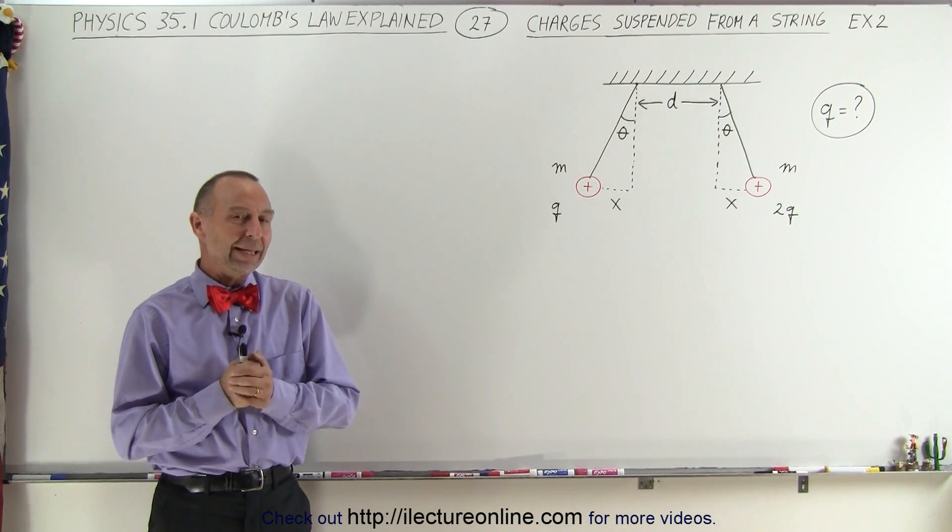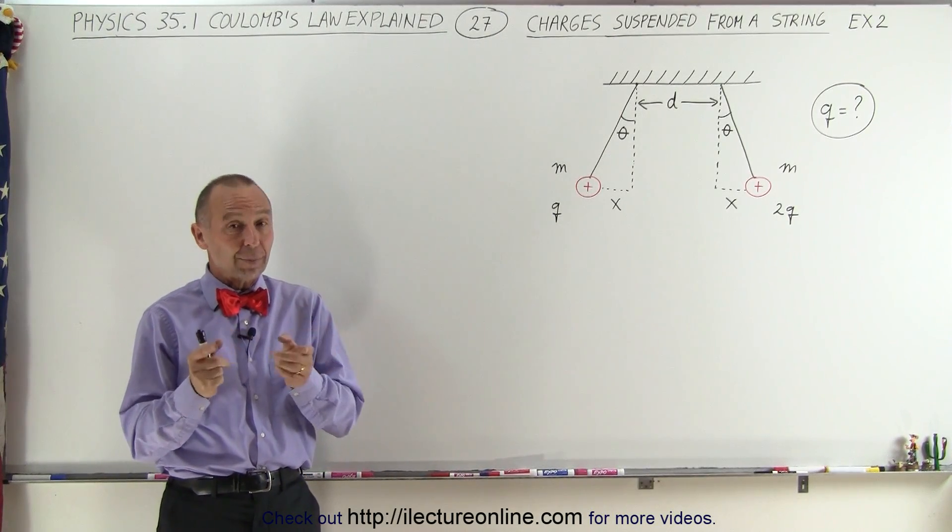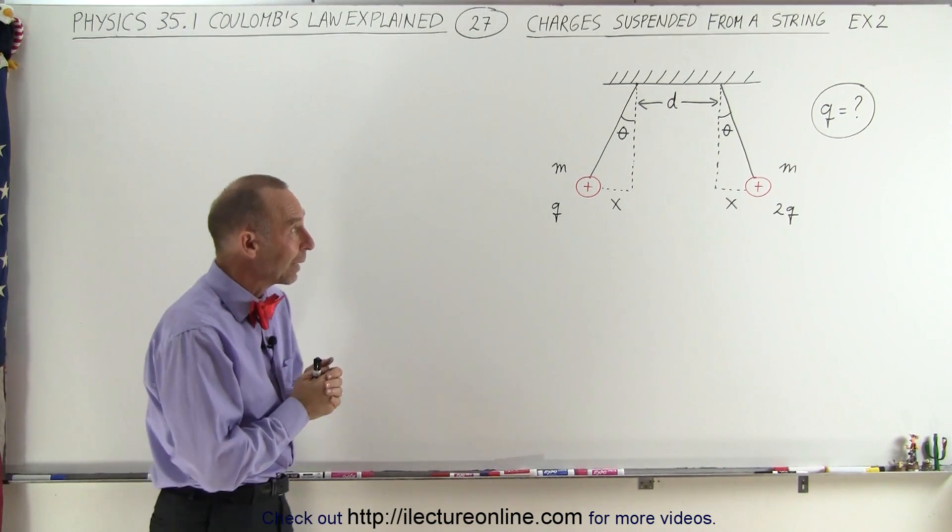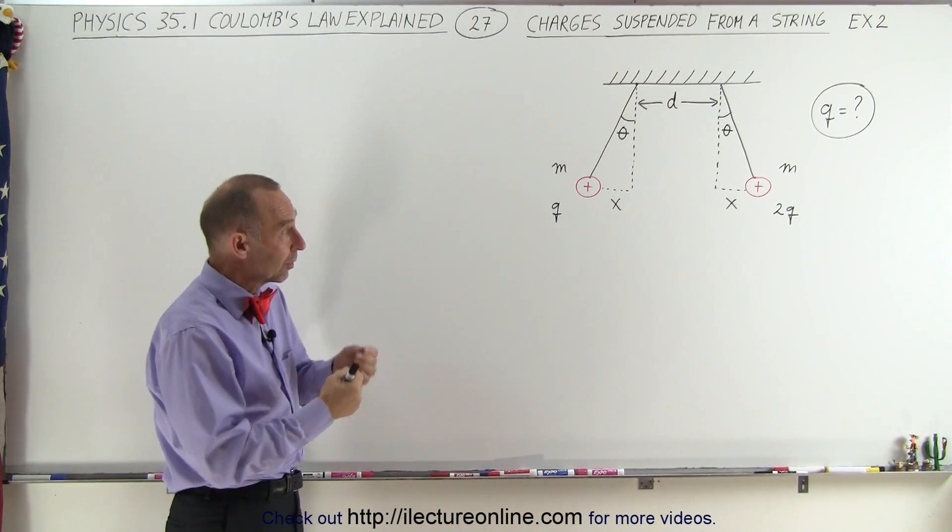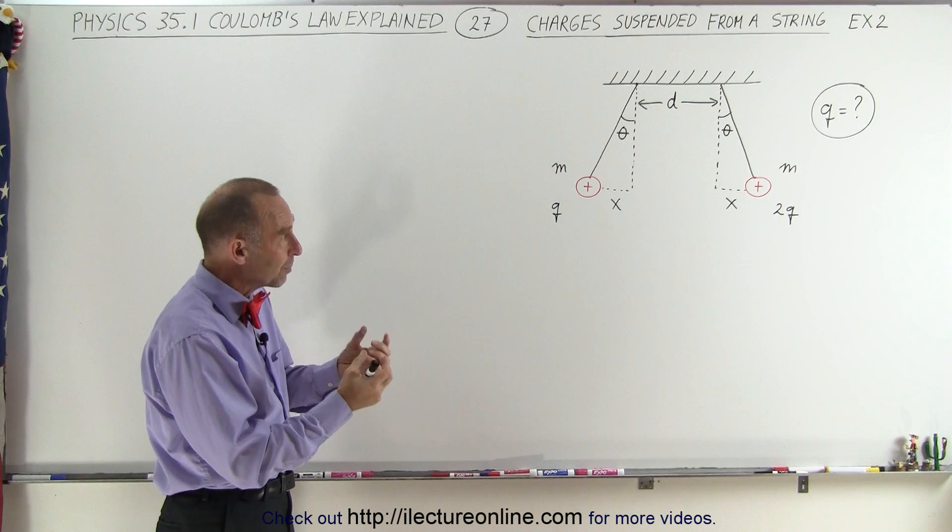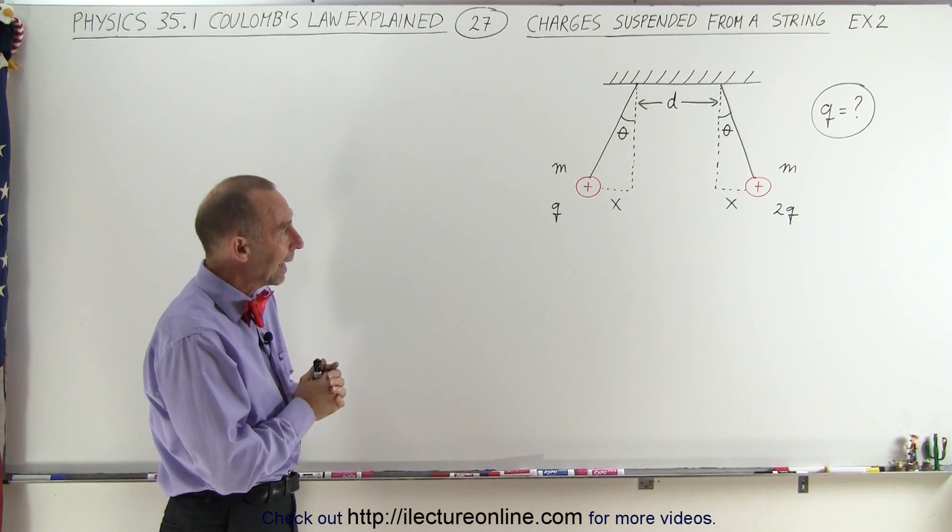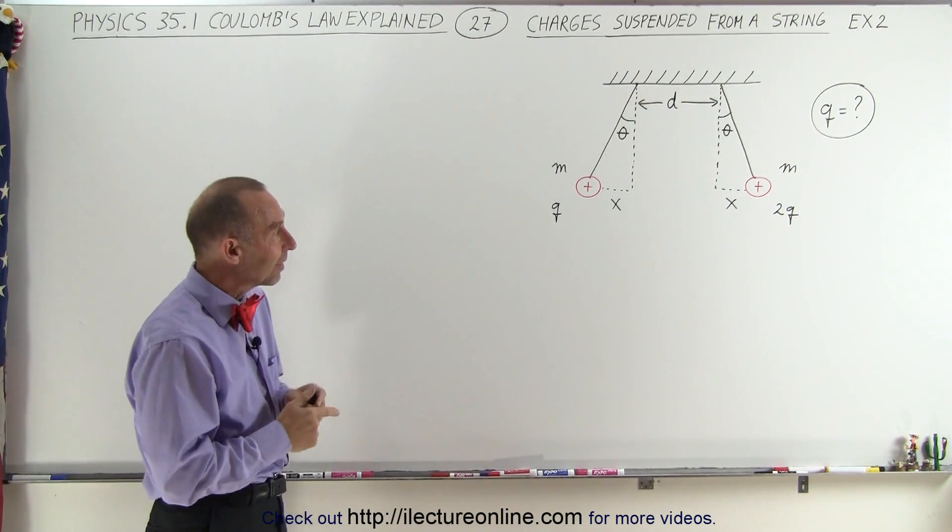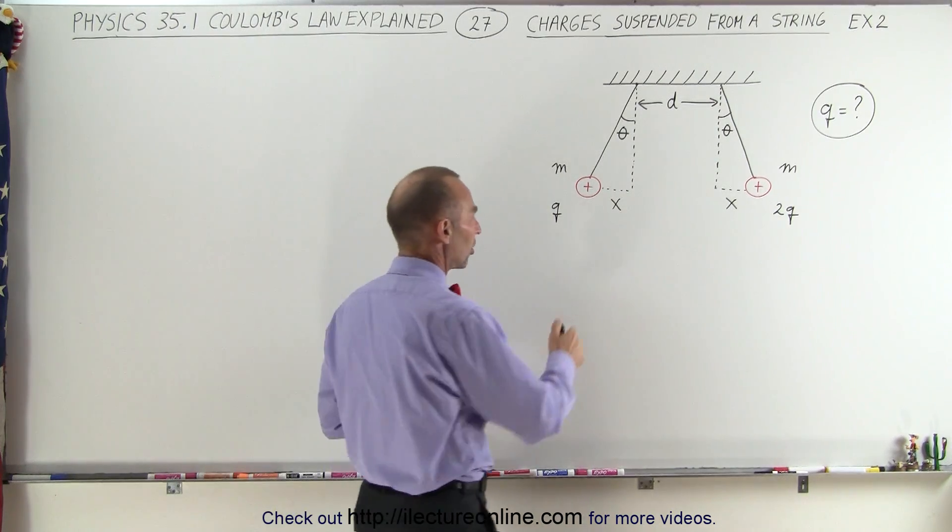Welcome to ElectronLine. Here we have a slight variant of the problem we did in the previous video. Again we have two strings. To those strings we have two objects with mass m attached to them, and they each also have a charge on them, but in this case they do not have an equal amount of charge.